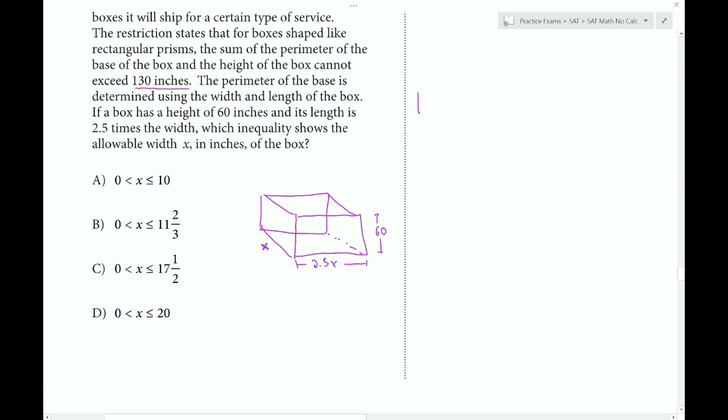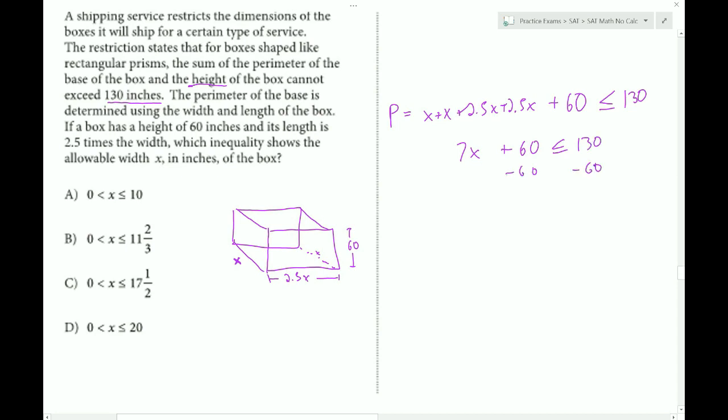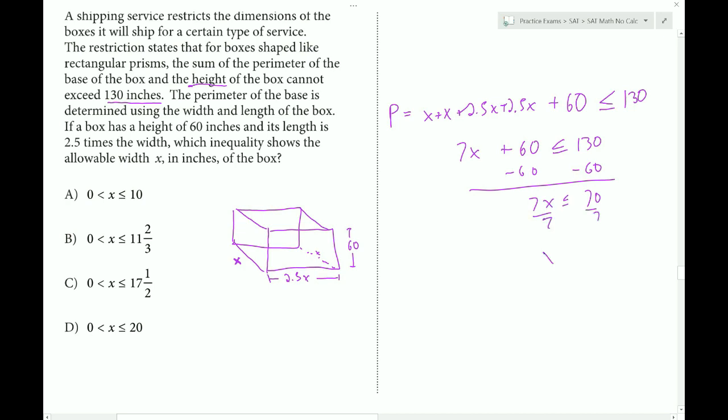Which inequality shows the available width in inches? They're using x. So I'd better switch my width letter to x. And now we need to come up with the constraint on our parameter x. So the sum of the perimeter of the base of the box and the height of the box. The perimeter of the base of the box would have x on those two sides, and then it would have 2.5x on the front and back portions. And then from that, we have to add the height. So the sum of this cannot exceed, it means it has to be less than or equal to 130. So now we just combine like terms. So we get x and x and 2.5 and 2.5. It's 5, it's 6, it's 7. So 7x plus 60. Subtract 60, so that would equal 70. Divide by 7, and get x is less than or equal to 10. Choice A.